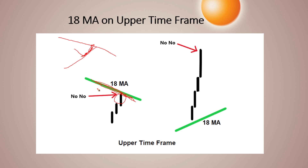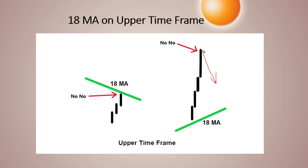We want to stay away from that kind of trade. The second thing you want to avoid is when you get really extended away on the upper time frame. When we get really far away from the 18-month, the risk of a pullback starts to increase, and I think it makes the probabilities of taking a trade — even off the daily chart — a little more risky. Let's go ahead and look at a few examples.